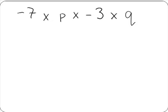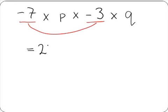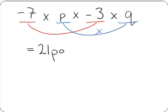Our final example is minus 7 multiplied by p multiplied by minus 3 multiplied by q. We multiply our numbers: minus 7 multiplied by minus 3. When we multiply a minus by a minus, we get a plus, so minus 7 by minus 3 gives us plus 21. Then we multiply our letters: p multiplied by q gives us pq. So we are left with 21pq.